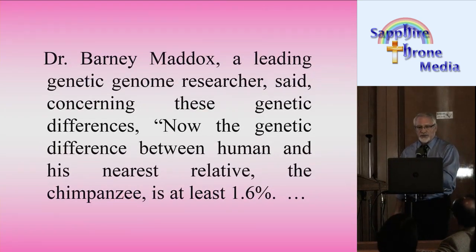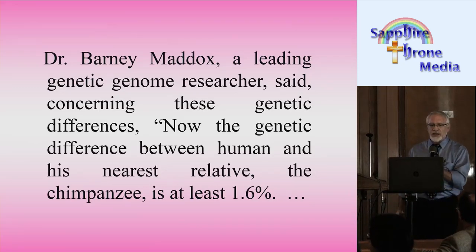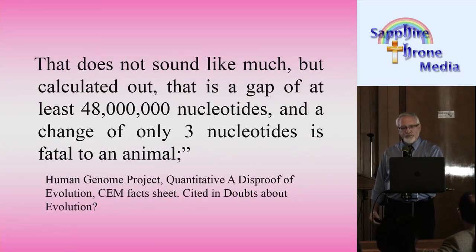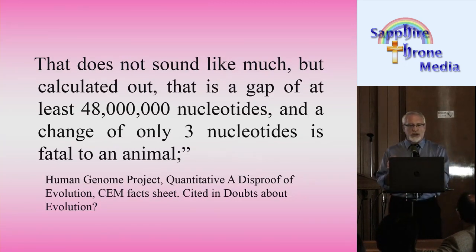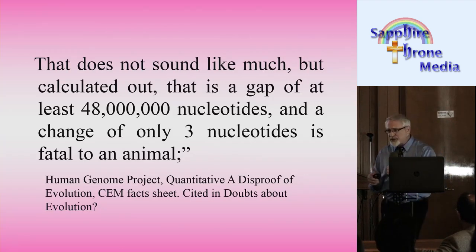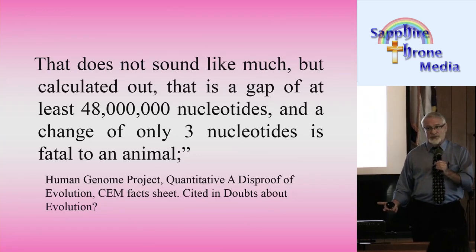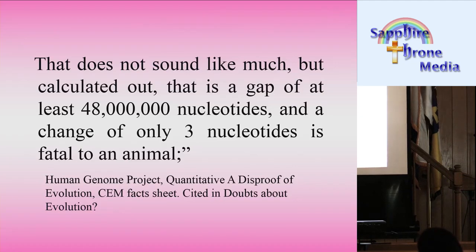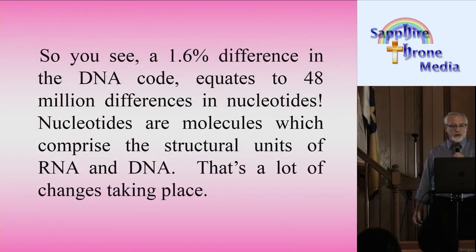Dr. Barney Maddox, a leading genetic genome researcher, said: 'The genetic difference between human and his nearest relative, the chimpanzee, is at least 1.6%. That doesn't sound like much, but when you calculate it out, that is a gap of 48 million nucleotides.' He goes on to say that changing just three nucleotides can be fatal to an animal — but here there are 48 million differences at just 1.6% difference in the DNA code.